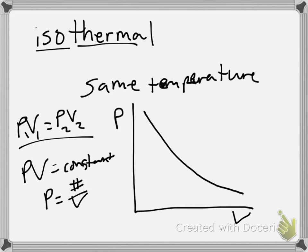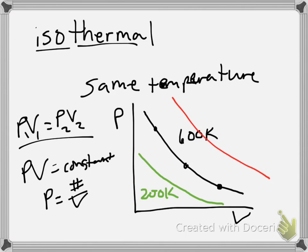Every point on an isothermal curve has the exact same temperature. A lower curve on the PV diagram corresponds to a lower temperature — for example, 200 K — while a higher curve might be 600 K, and an even higher one 1000 K. Moving from point A to point C through point B along one of these curves means every point has the same temperature but different pressure and volume combinations.